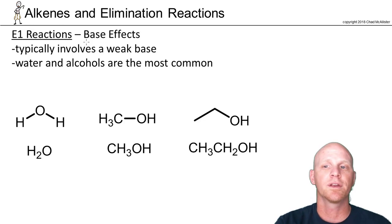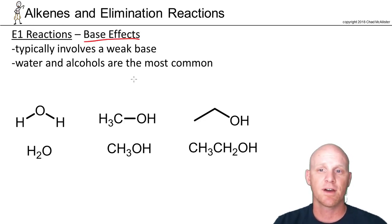Just as we did with E2 and SN1, we're going to talk about base effects first. E1 reactions typically involve a weak base, just like SN1 often involved a weak nucleophile. The key here is that the base is not involved in the rate-determining step at all, it's not in the rate law, and a weak base is just fine. Water and alcohols are the most common here. Here I've got water, methanol, ethanol. Carboxylic acid might also be in the mix, but water and alcohols are by far the most common weak bases we'll see in E1 reactions.